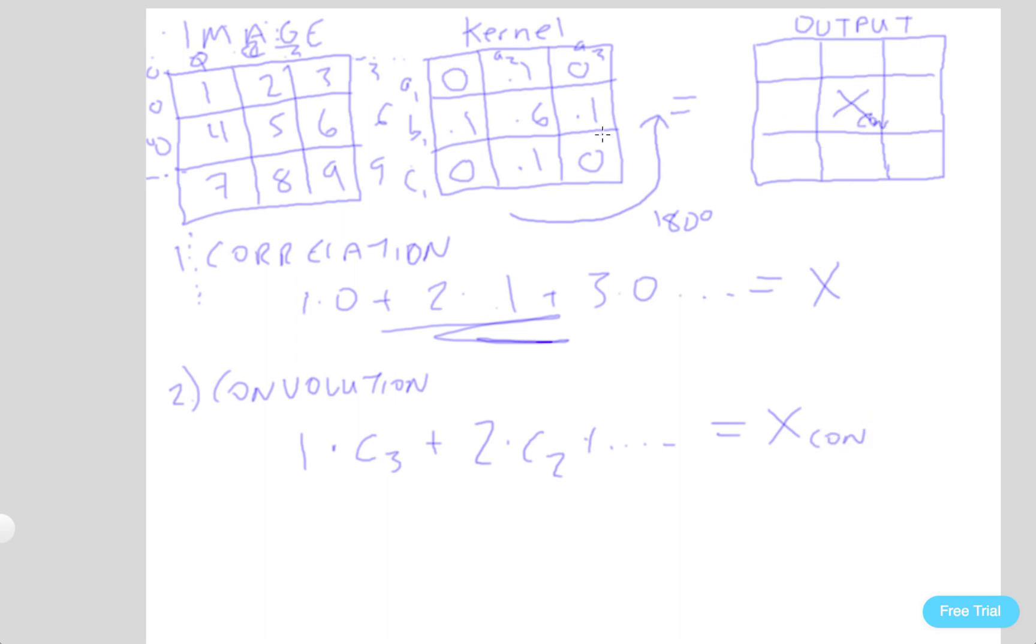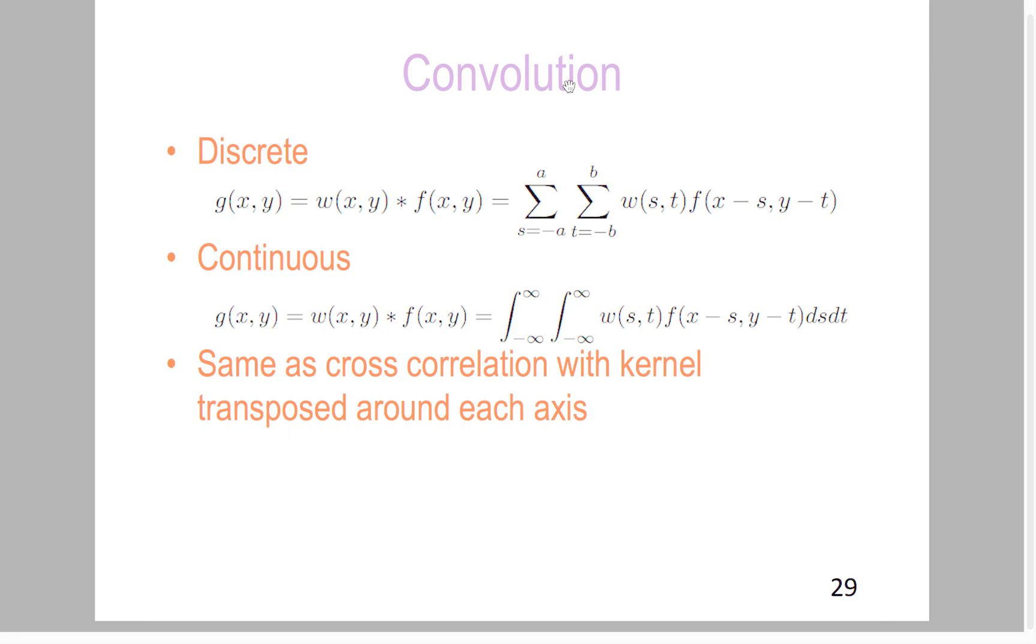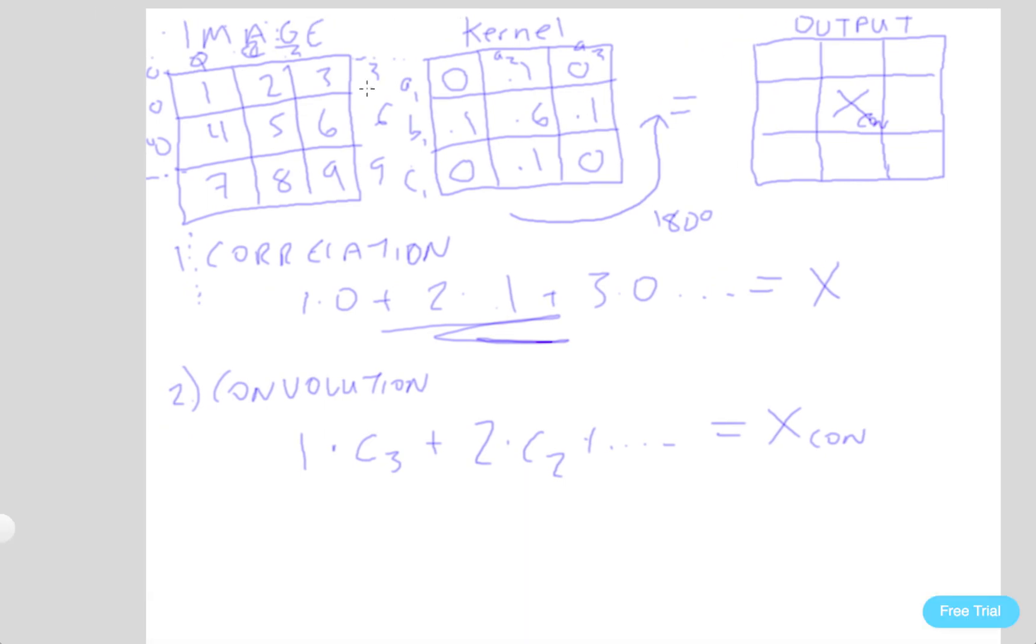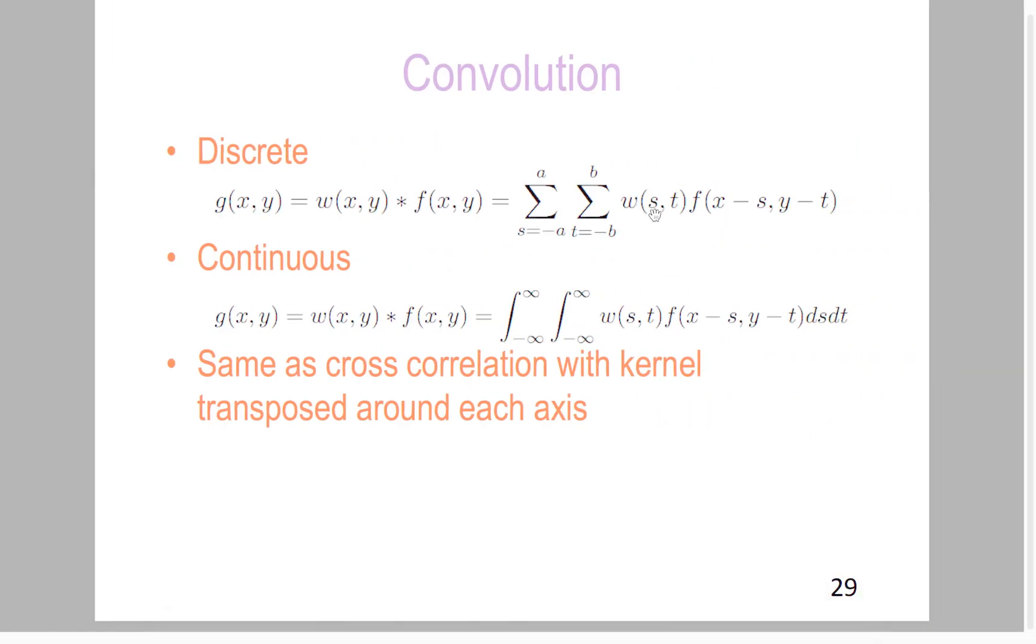So there you have it. That's our graphical representation. What does this actually mean in the math? Well, here's a convolution case where we have the summation of this w, which can represent the function of our kernel, and f, which is our image function, those are multiplied together after we sum values from minus a to a, and minus b to b.